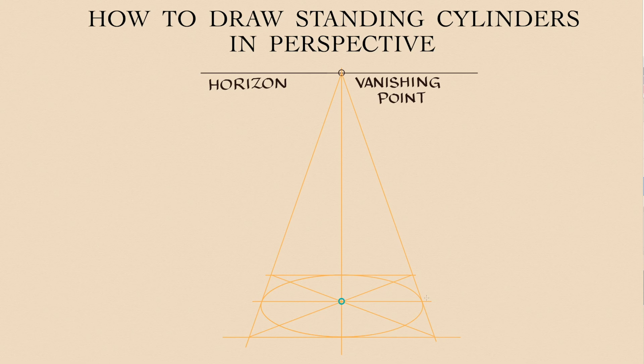This oval is inscribed into the square, which is also seen in one-point perspective. Two diagonals of that square are crossing in the centre of the oval, marked here in green, which is different from the centre of the ellipse.